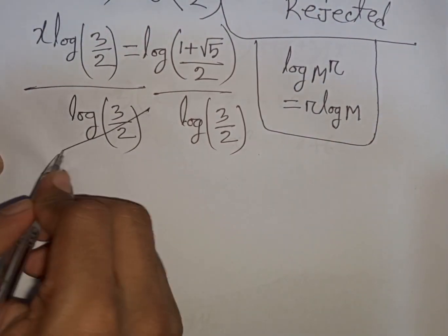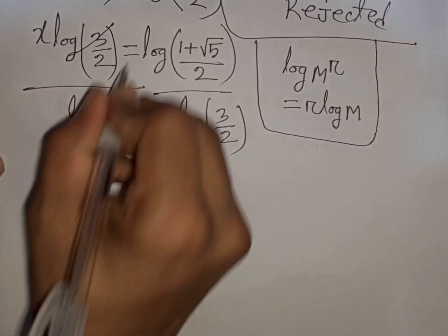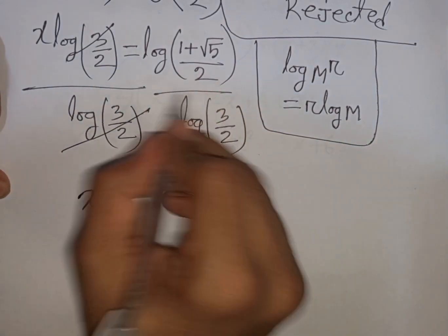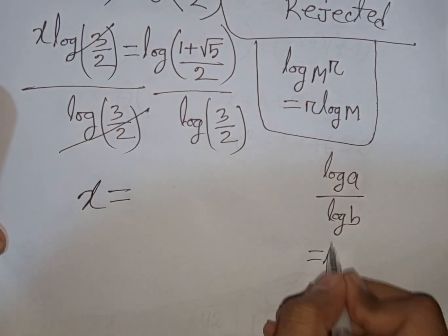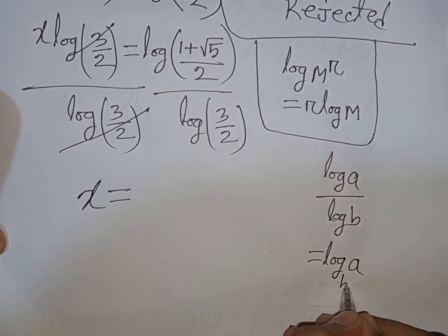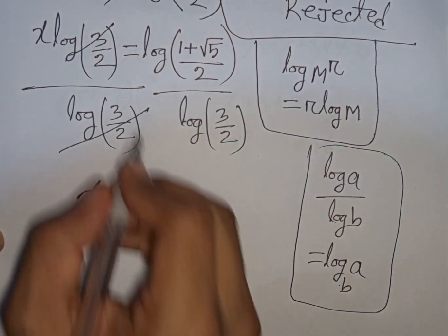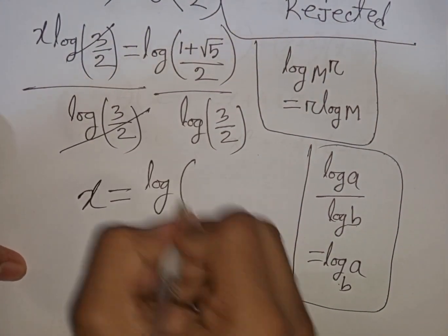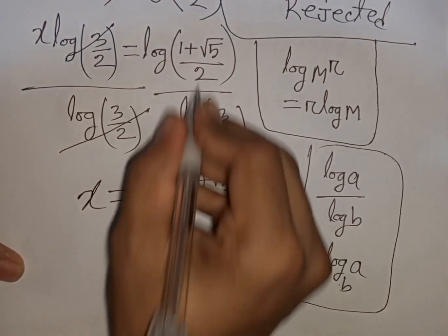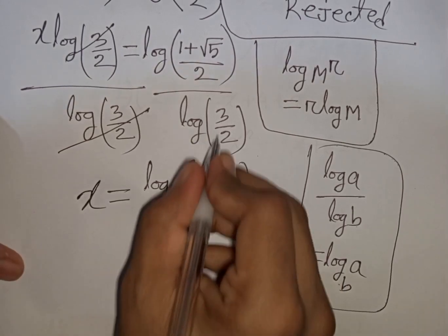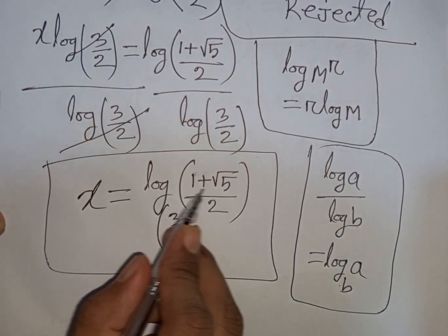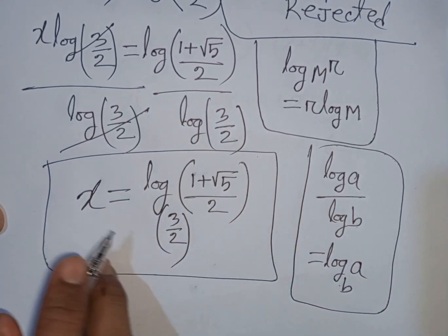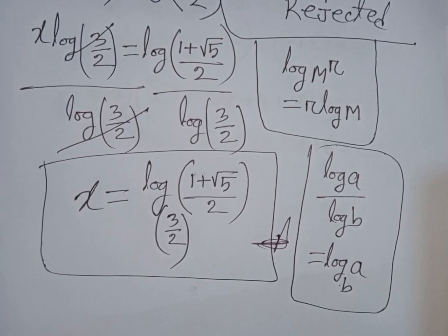The log(3 over 2) cancels on the left side. Applying the change of base rule that log(a) divided by log(b) equals log base b of a, we get x equals log base (3 over 2) of (1 plus square root of 5) over 2. This is the value of x and our final answer.